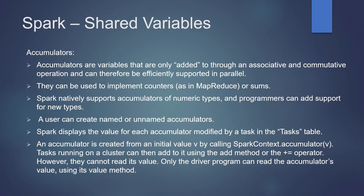The next one is accumulators. Accumulators are variables that are only added to through an associative and commutative operation, and can therefore be efficiently supported in parallel. They are used to implement counters or sums. Spark natively supports accumulators of numeric types, where programmers can also add support for new types.